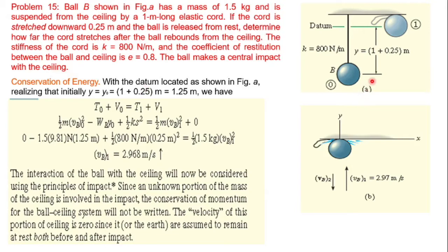Initially at position zero, the ball is at the stressed position with the cord stretched 0.25 meter — total cord length 1.25 meters. The ball moves upward toward the ceiling; position 1 is just before impact with the ceiling. After impact, the ball rebounds — that is position 2. We then find position 3 after the cord stretches again.